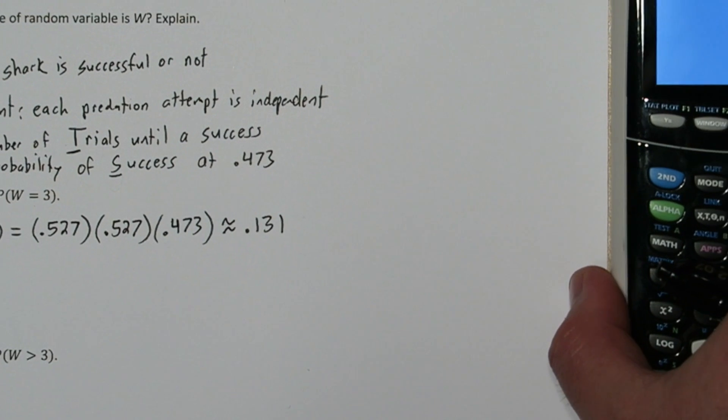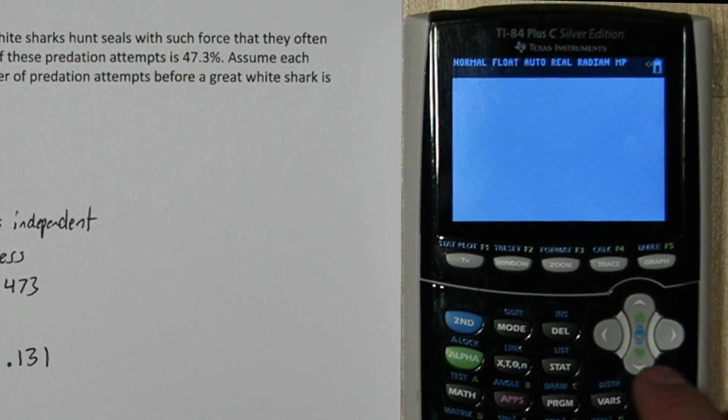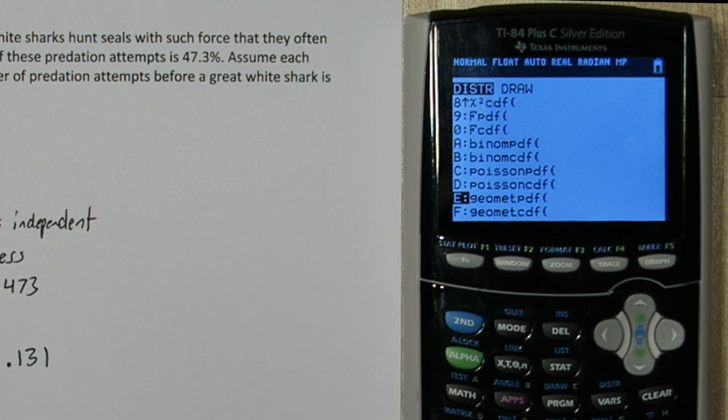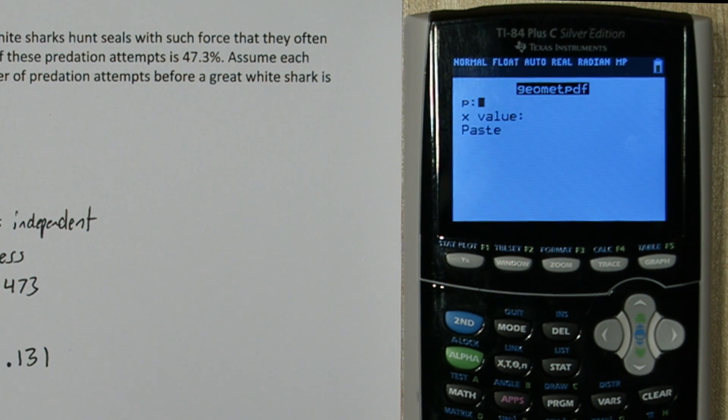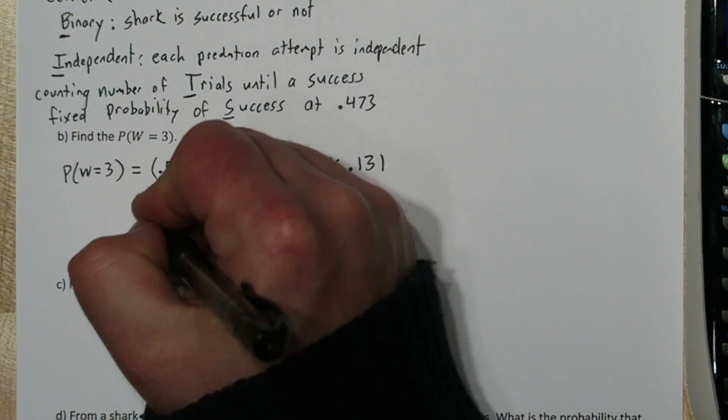Now you can actually calculate this on the calculator. If you press 2nd and VARS and go down towards the bottom to Geomet PDF, this is the geometric probability density function. So the probability of success is .473, and we're interested in the first success occurring on the third trial. And there we go, we get a probability that matches what we found by hand.